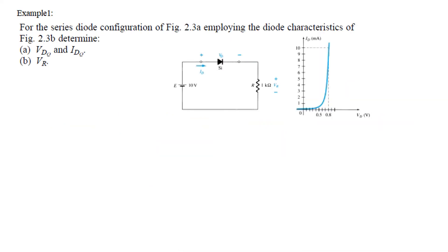Now let us do this example. For the series diode configuration, the diode characteristics is given here. Find the VdQ and IdQ, that is the quiescent point voltage and quiescent point current. And then in part B we got to find the voltage across resistance Vr. So as we have learned this is the formula. We find the two extremes. So when putting this 0 we find Id.